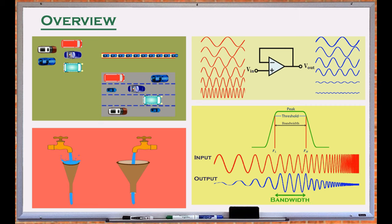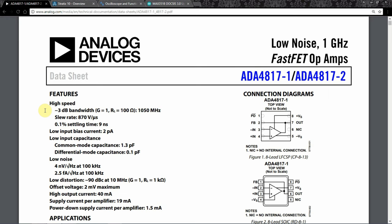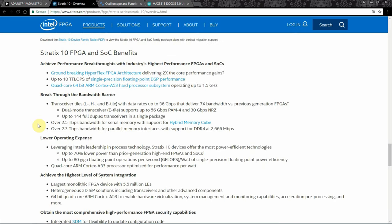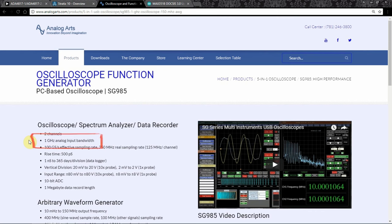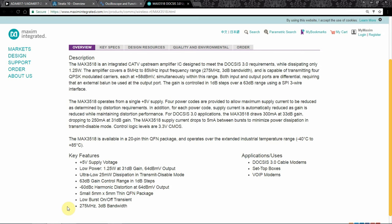It defines the usable frequency range of a device. Bandwidth is a key specification in both analog and digital systems. It is an important factor to consider when selecting an electronic component.